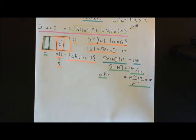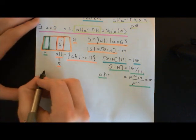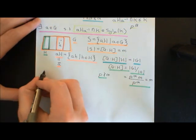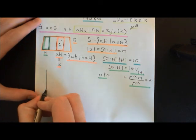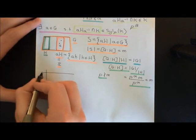What I want to do next is consider a group action by the group G on this set S, and this group action is what we're going to use to prove the second Sylow theorem. So, the group action by G on S — this is going to be a composition table.